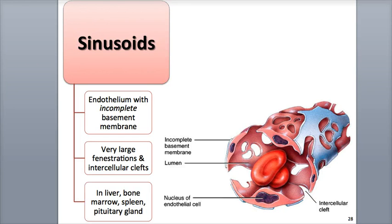Blood can also flow from one capillary bed directly into another through special vessels called portal veins, which are part of a portal system. These circulation systems are named after the second capillary bed they are supplying. For example, the liver's portal system is called the hepatic portal circulation.